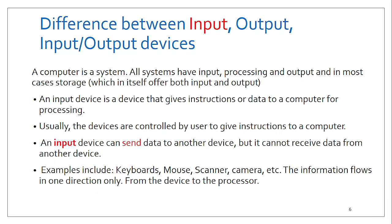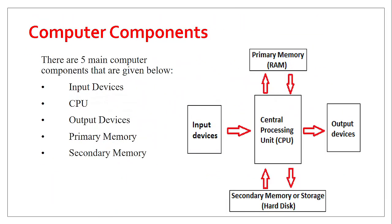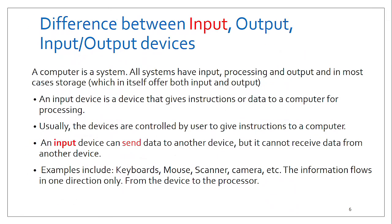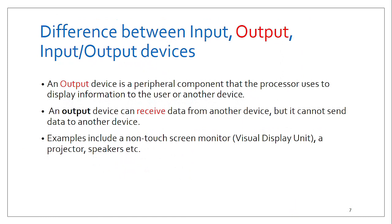Input devices give instructions or data to the processor to process. Examples include the scanner, keyboard, and mouse. Input only flows in one direction. Of course, we also have output devices, which perform the work of receiving data from other parts of the computer — more specifically the CPU — after it has processed that particular data. Good examples are speakers and projectors. These also receive data from just one direction.